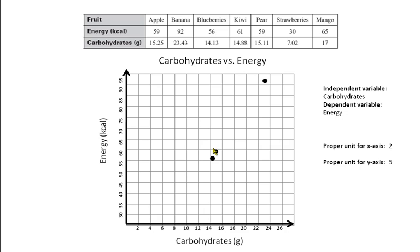So we have 14.88 at 61, which is just above there. Then 15.11 — again really close to where we've been before — at 59, so that's down here a little bit. Then we have a much smaller value: 7.02, which is basically 7, over here between 6 and 8, at 30. Remember we have a squiggly line showing we've skipped values, so we put a dot right there. And our very last data point is between 16 and 18 — we go to 17, at 65, right on the line.